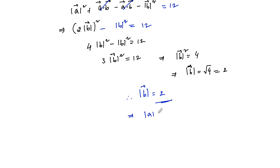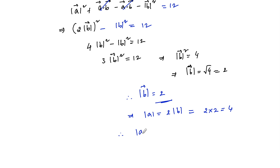And mod a is equal to 2 times mod b, which is equal to 2 into 2, which is 4. Therefore mod a is equal to 4 and mod b is equal to 2.